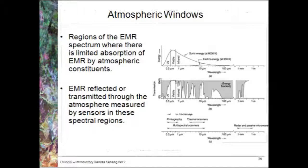Those regions where light can get through the atmosphere are called atmospheric windows. These are not considering the areas where water, ozone, or oxygen are absorbing light. This is where the electromagnetic radiation gets through the atmosphere and is able to get back up to the sensor.